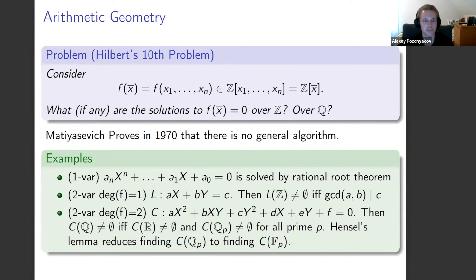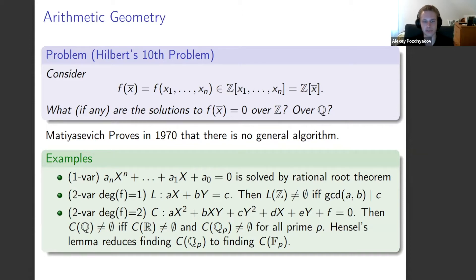We can still make progress by restricting to simpler problems — looking at polynomials with fewer variables and lower degrees. With a single variable polynomial, the problem is fairly straightforward via the rational root theorem: if a rational root exists, the numerator must divide the constant term and the denominator must divide the leading coefficient. This gives a finite set of possible rational roots to check, and we can factor out found roots and continue inductively.